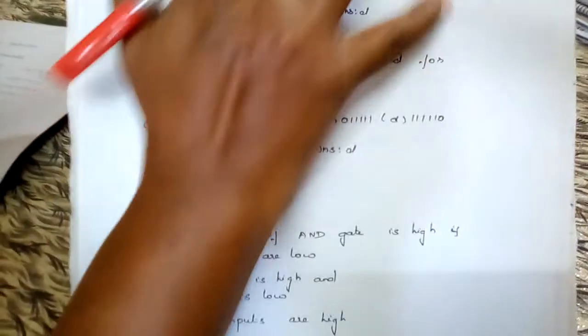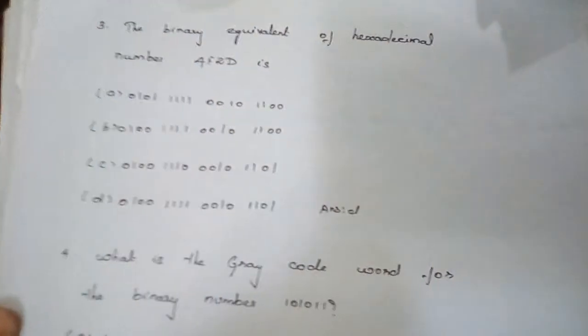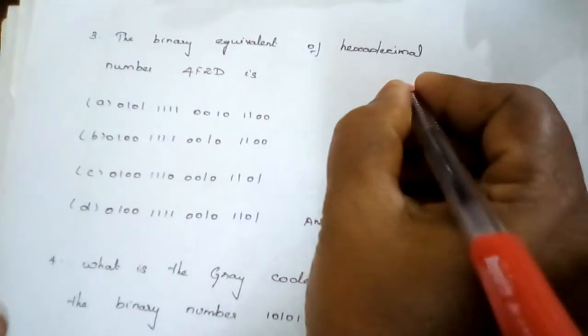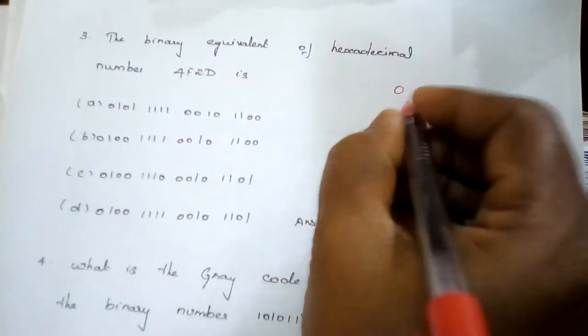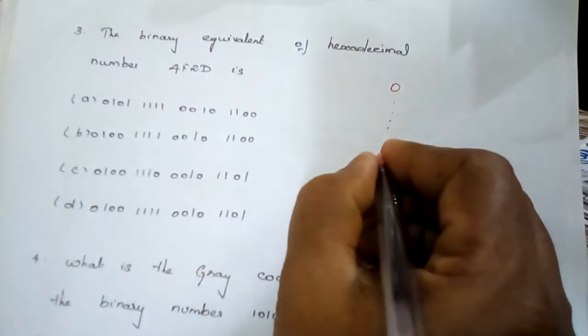The next question: What is the binary equivalent of the hexadecimal number 4F2D? We have the binary equivalents for hexadecimal numbers from 0 to F.